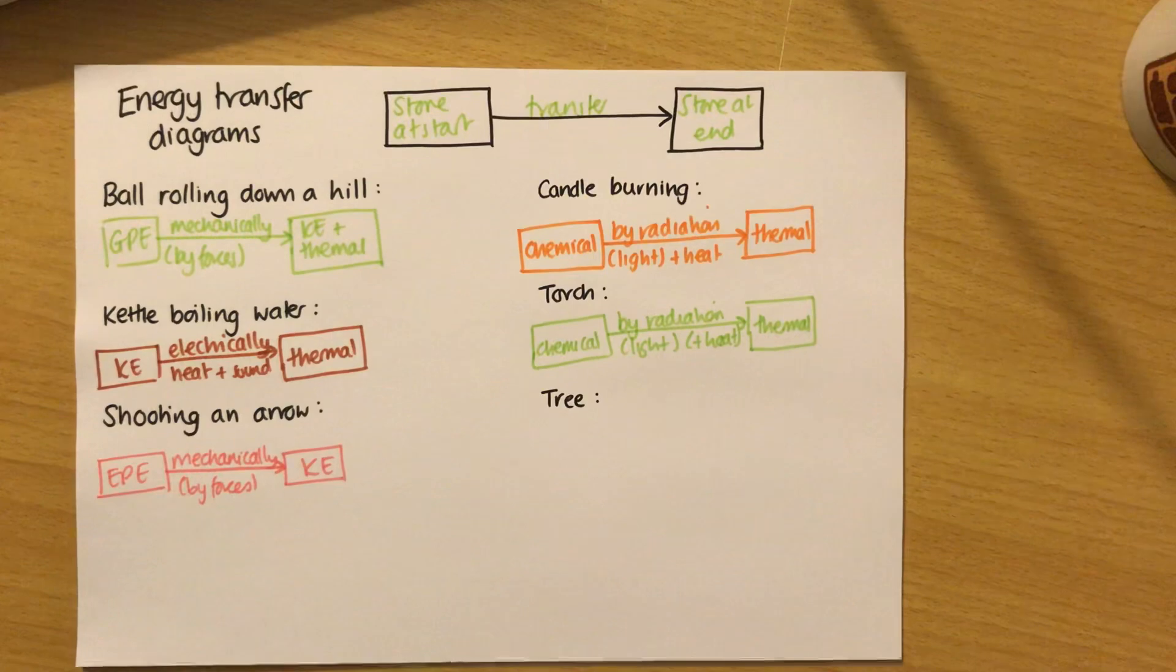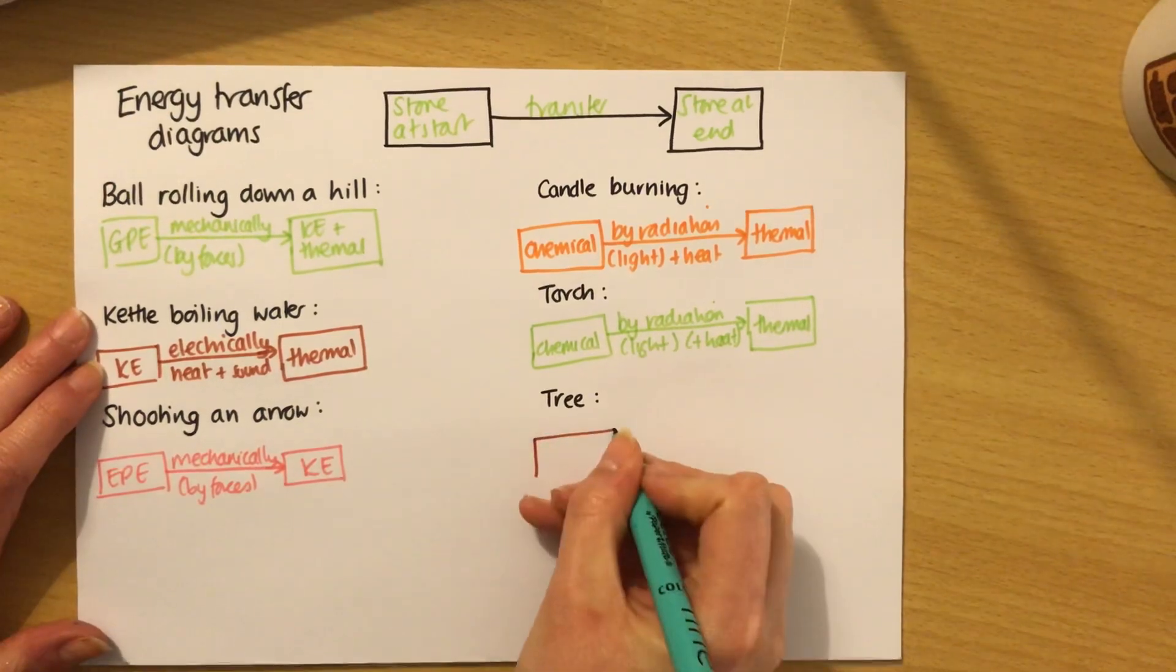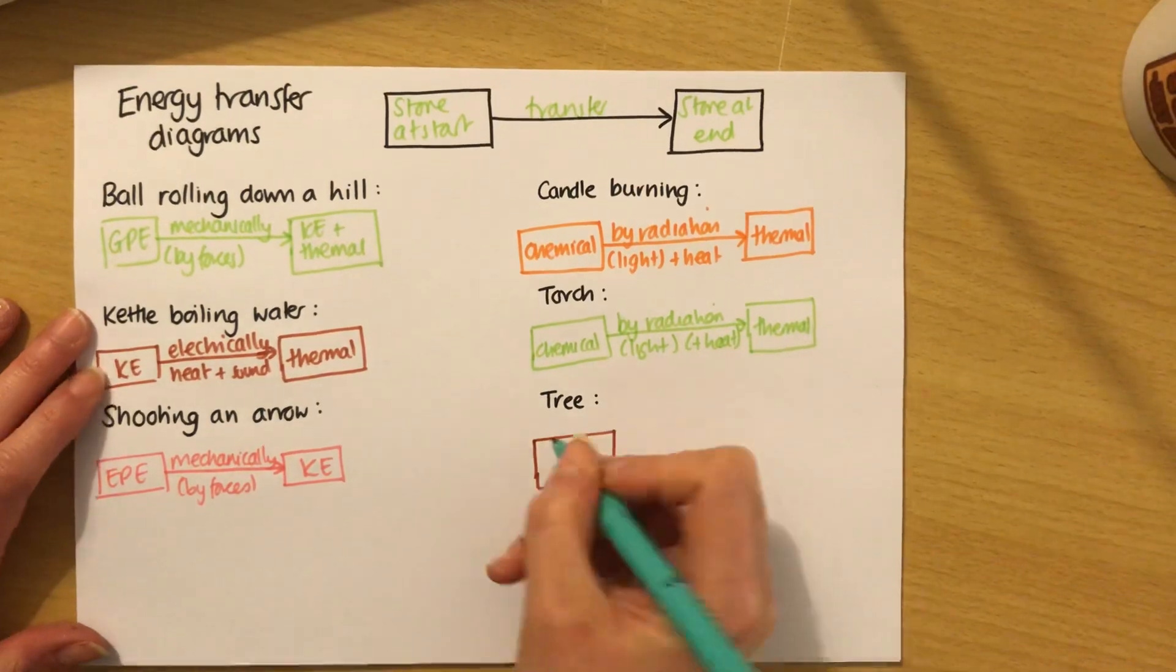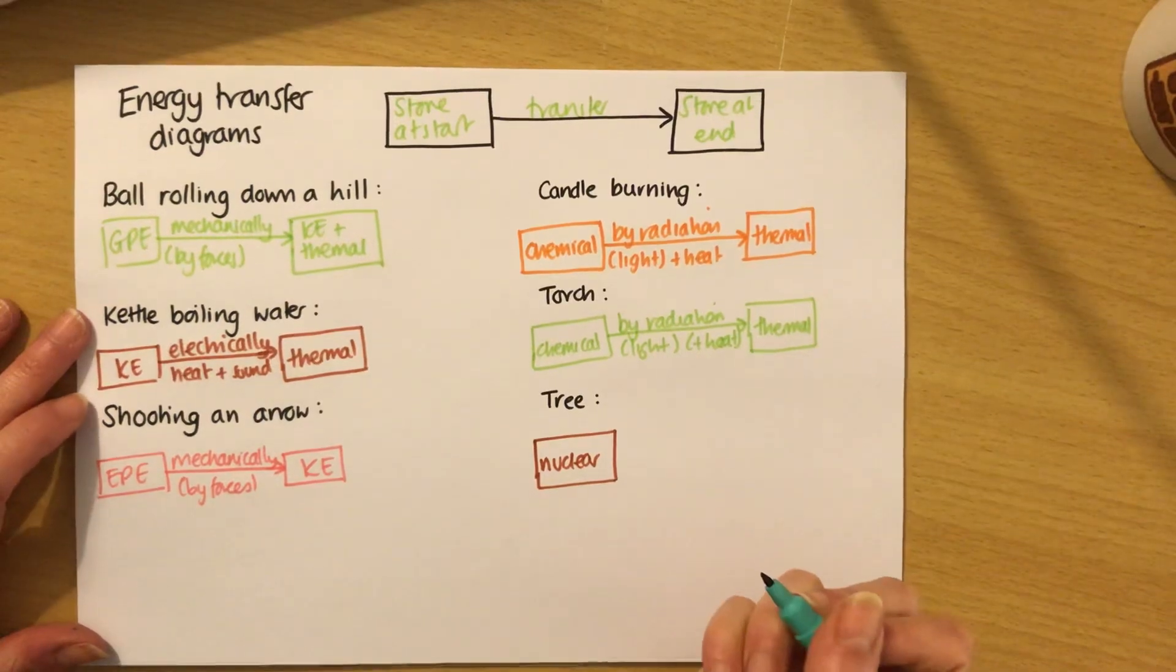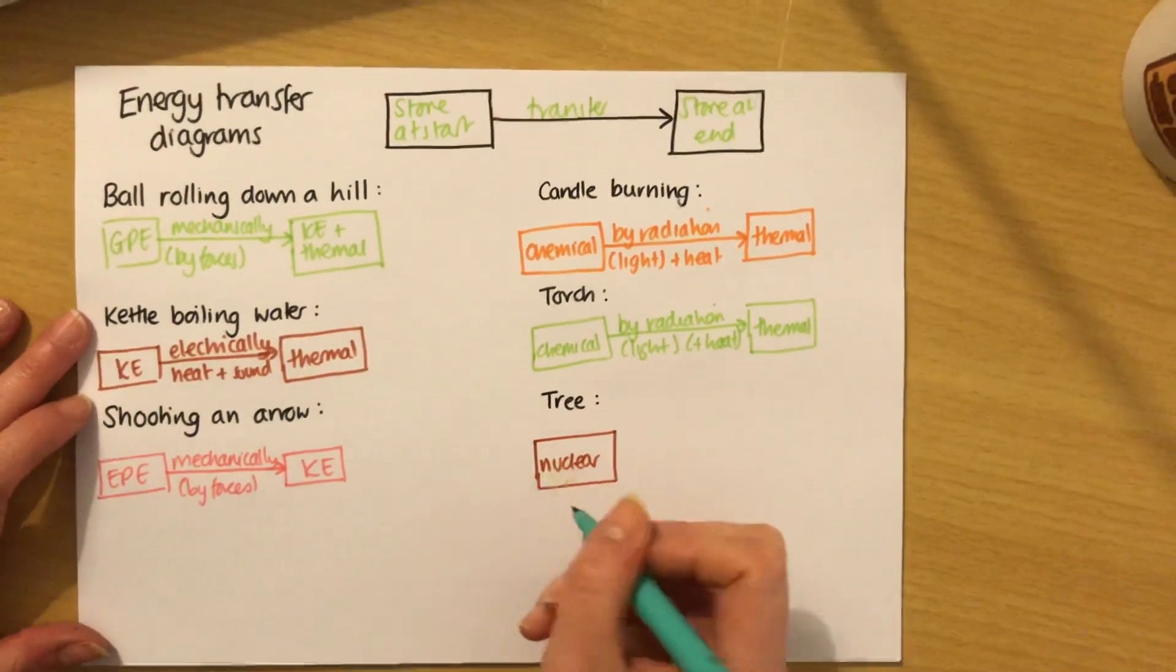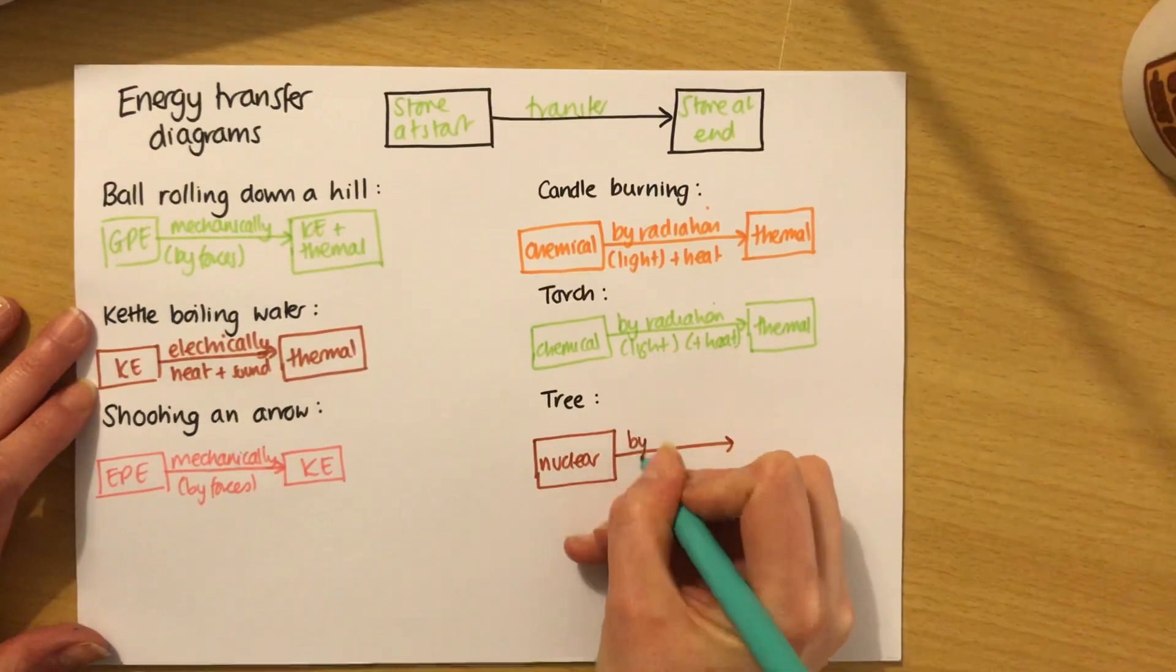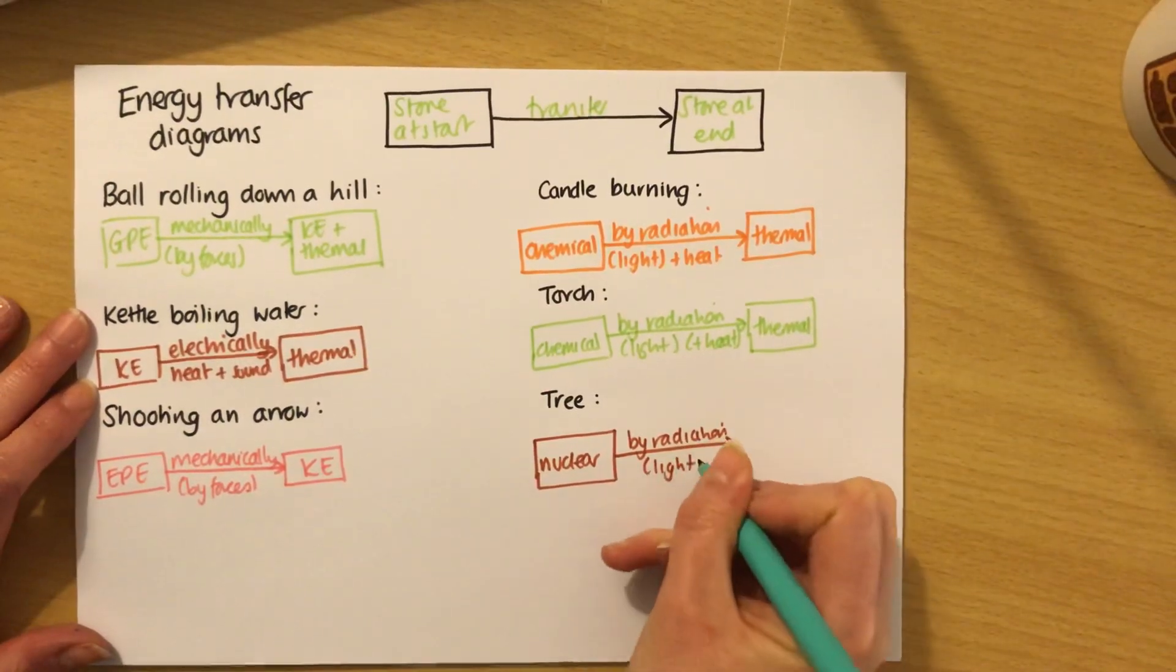This one I quite like. It's a tree, it's a bit random. But think about what trees do. Trees grow. And how do they do that? They capture the energy of the sun through photosynthesis. So the energy that a tree possesses actually originally comes from the sun. And the sun stores its energy not as thermal energy but as nuclear energy, because the sun is powered by nuclear fusion, which is a nuclear process. So we start with the nuclear energy of the sun, and then that is transmitted to earth as light.